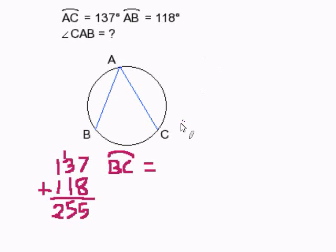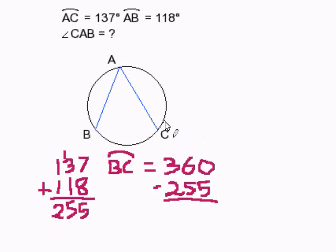So now, that tells us that this has to be 360 minus 255. Because the total degree amount for a circle is 360. And we now know that this plus this. So 360 minus that will give us the arc degree of BC. And we get 105 degrees.